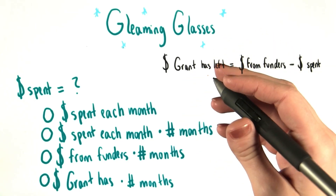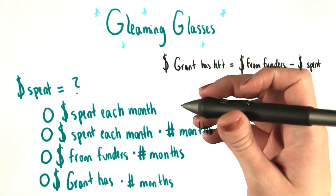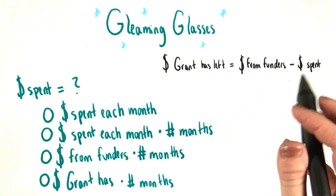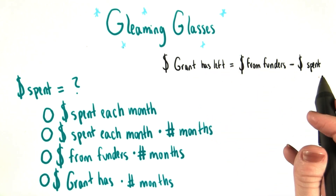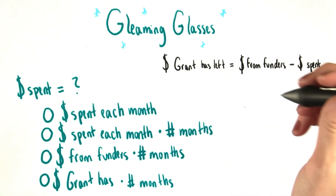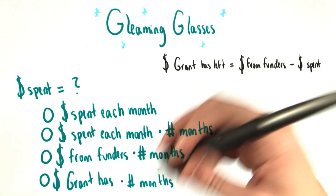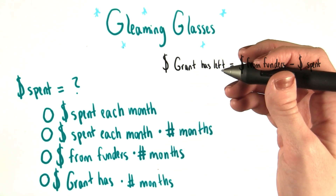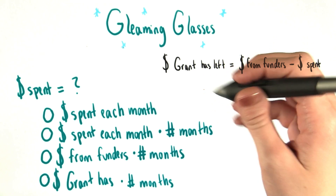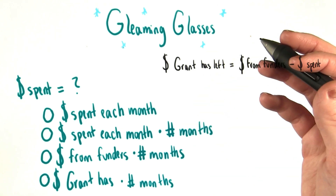We said earlier that Grant spends the same amount of money every month, which means that the total amount of money that he spent will increase incrementally as each month goes by. We know then that the total amount of money spent can't just be equal to the money spent each month. Our answer down here has to involve time too.